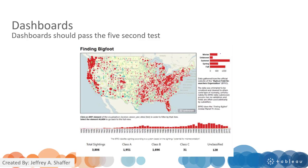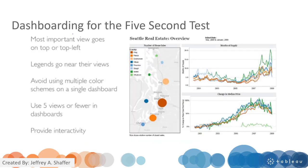In addition to those rules, the dashboard should also pass what we call the five-second test — the goal is that you should know what is going on in the dashboard within five seconds. To achieve this: have a good title that immediately tells you what you are looking at (a title like 'My Dashboard' would not be helpful). Move the most important parts to the top or top-left, as discussed earlier. Legends should go nearest to the viewers.